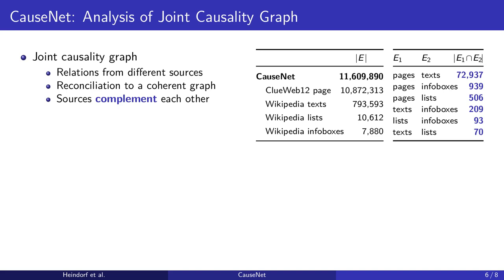In this way, we obtain a large-scale causality graph containing about 11.6 million causal relations as shown in the table on the right-hand side.